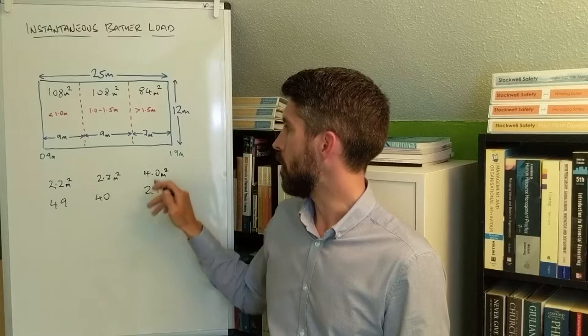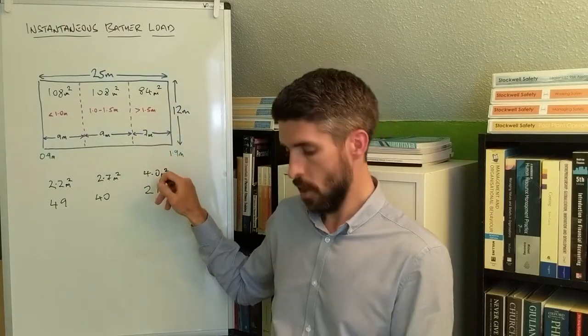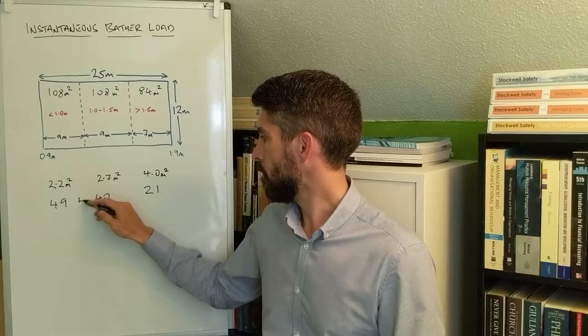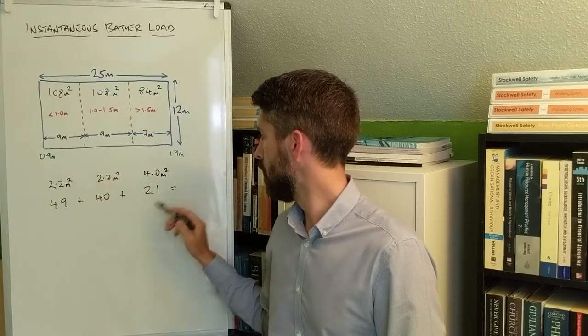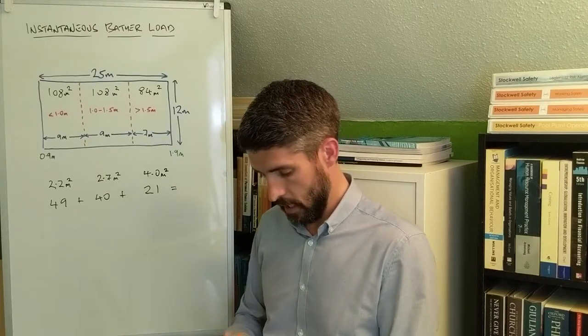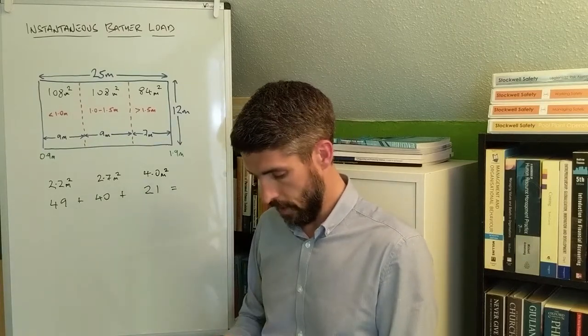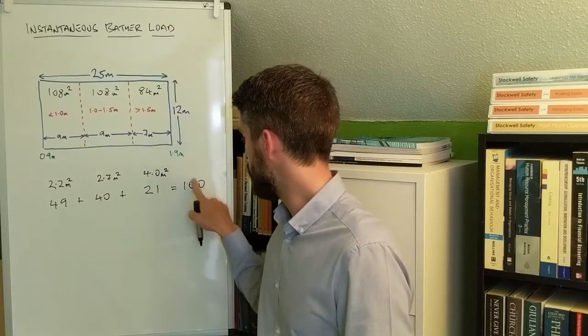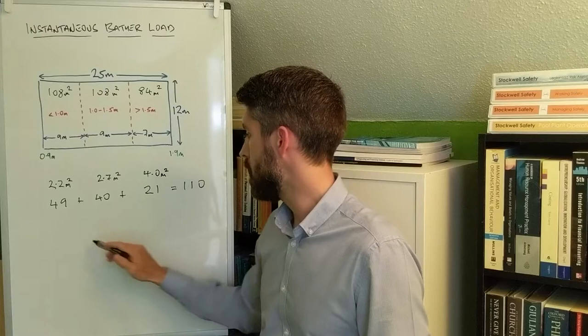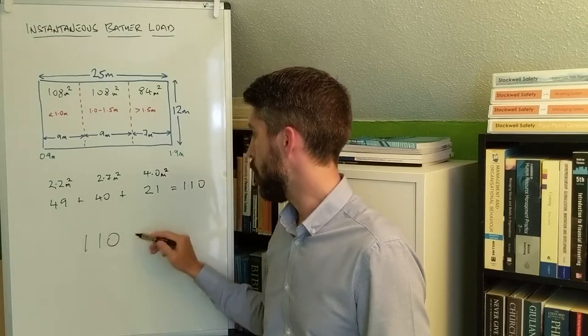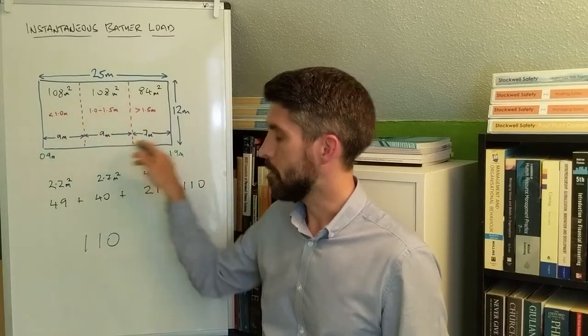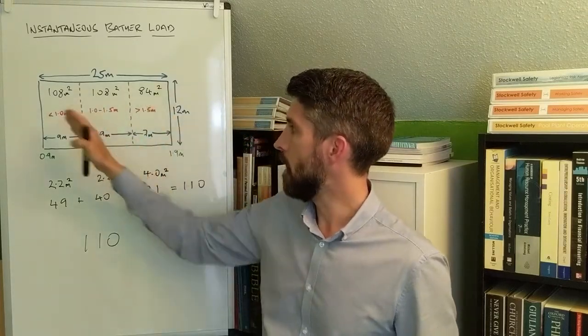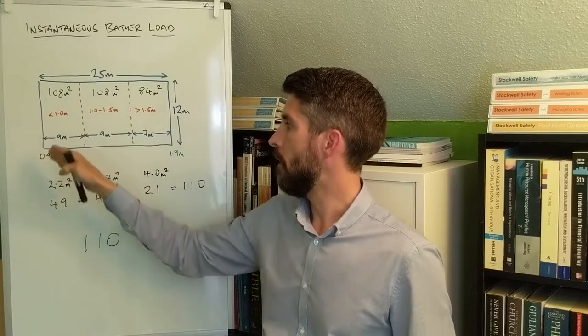That section could accommodate 21 people whilst still giving them 4 square meters of space. You add these together. So 21 plus 40 plus 49, you're going to end up with 110. So 110 is your instantaneous bathing load for that particular type of pool, 25 meters by 12, with these different depths occurring at various points down the length.